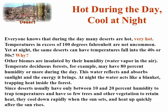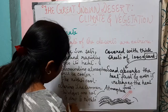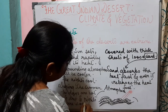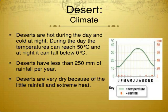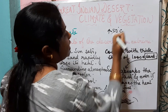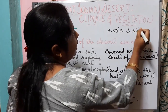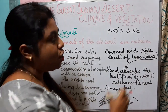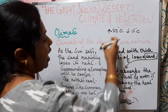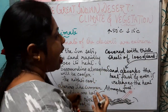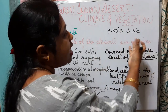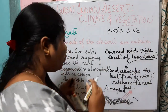During the daytime the temperature can reach up to 50 degrees Celsius and at night it can be 15 degrees Celsius. So you can see how hot it is during the day and how cool it is during the night in summer.